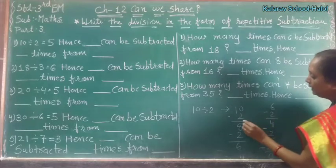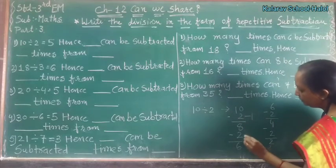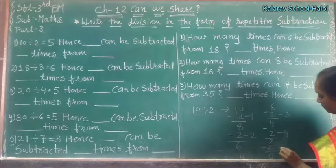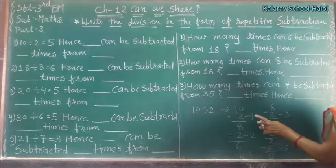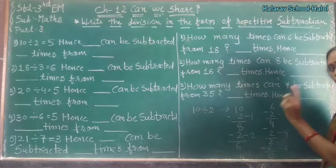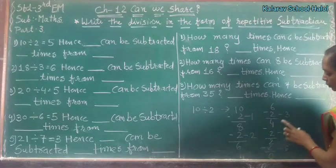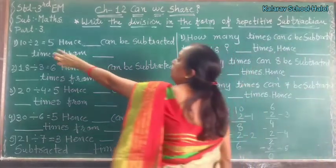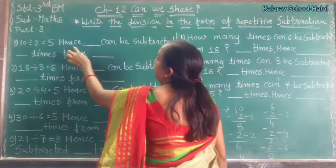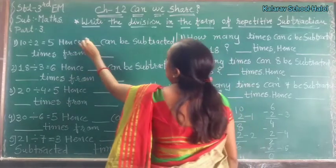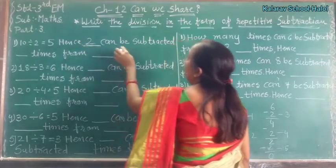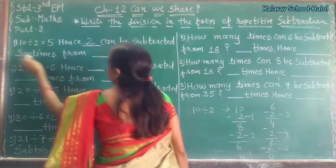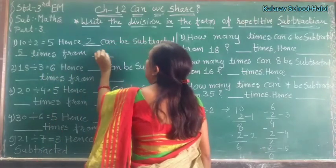How many times? 1 time, 2 times, 3 times, 4 times, and 5 times. So the answer came 5 times. Hence, 2 can be subtracted 5 times from 10.